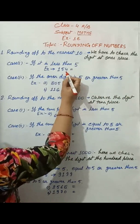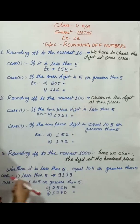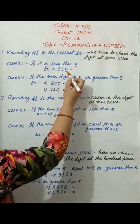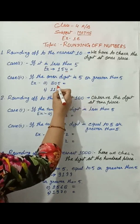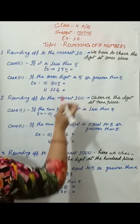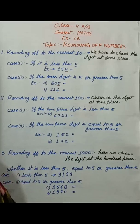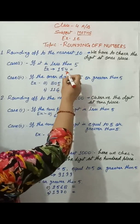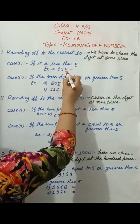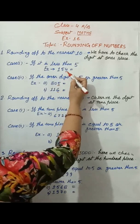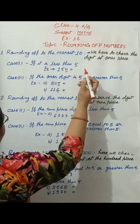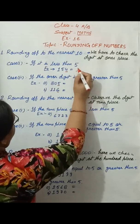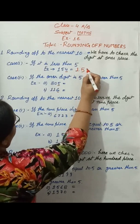Means we have to check here. Two cases arise. Case one: if the ones place digit is less than five, then we replace the ones digit by zero and retain the other digits as usual. For example, this becomes one hundred and fifty.